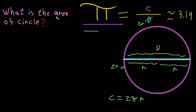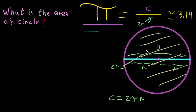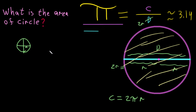Now, what is the area of the circle? Here is the area shown in another color. If I want to find this area, I will cut the circle into pieces. Each piece has a radius R on both slanted sides.